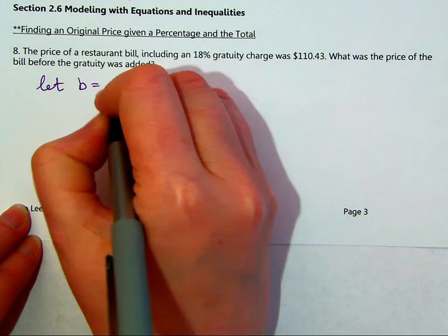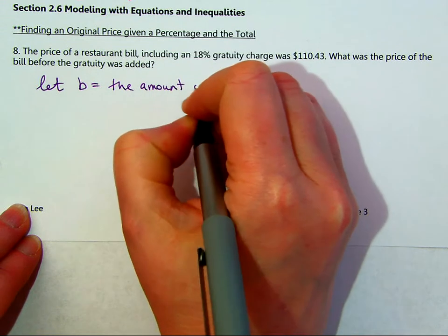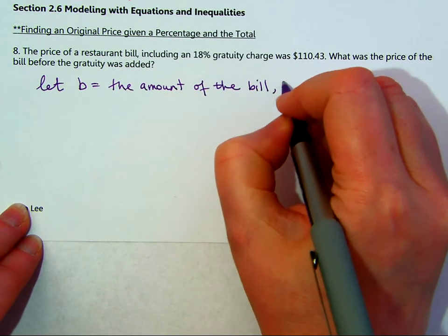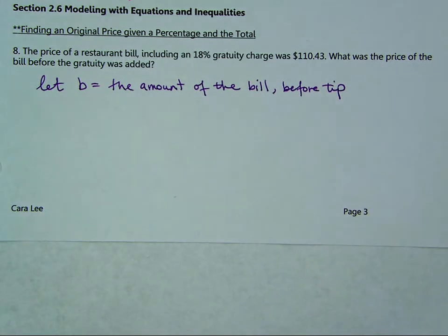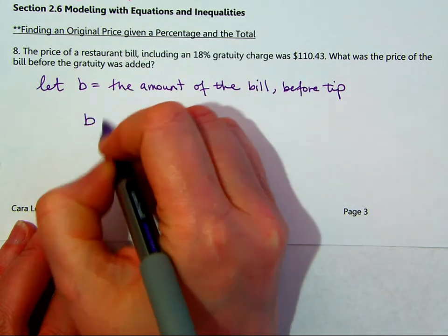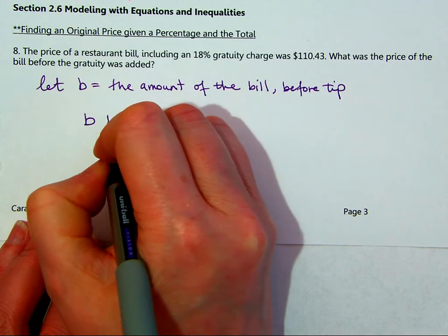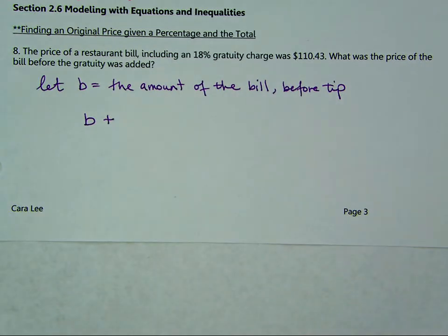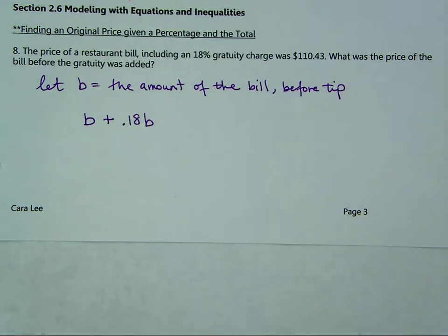Let B equal the amount of the bill before tip. So we know there's an 18% gratuity and we know the total. If we were calculating this bill, we would take the original amount and then add on the tip — 0.18 of the bill. That's the problem: we don't know that number. So we add 18% of the bill. This gives us B plus 0.18B, and whatever the bill is, plus 18% of it equals our total.